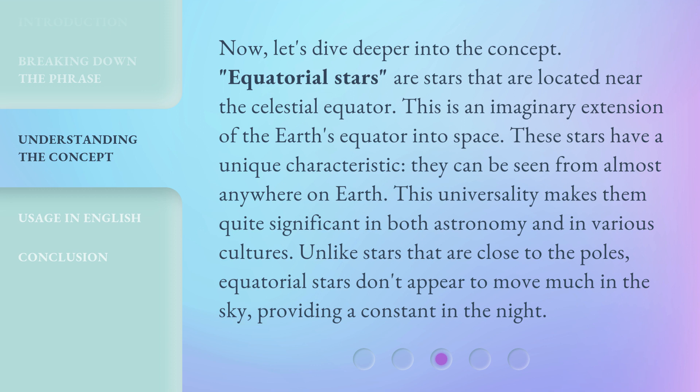These stars have a unique characteristic. They can be seen from almost anywhere on Earth. This universality makes them quite significant in both astronomy and in various cultures. Unlike stars that are close to the poles, equatorial stars don't appear to move much in the sky, providing a constant in the night.